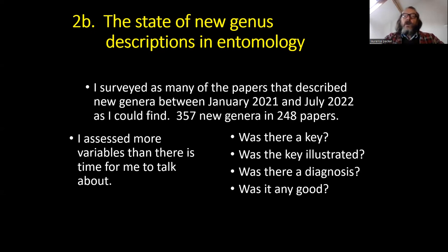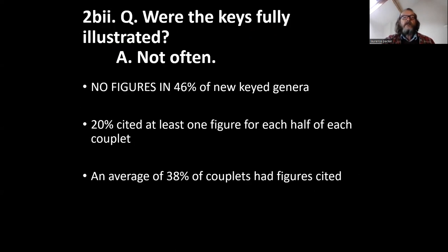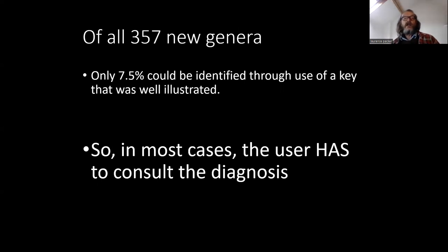So let's see whether these new genera descriptions were any good. Was there a key? Was it illustrated? Was the diagnosis useful? Was there a key? Sometimes. But for over half of the new genera, there wasn't a key provided to enable the user to actually identify. Was it illustrated? In almost half of them there wasn't a single illustration cited. Only a fifth of them cited at least one figure for each half of each couplet. Overall, only 7.5% of the 357 new genera could be easily identified through use of an illustrated key.